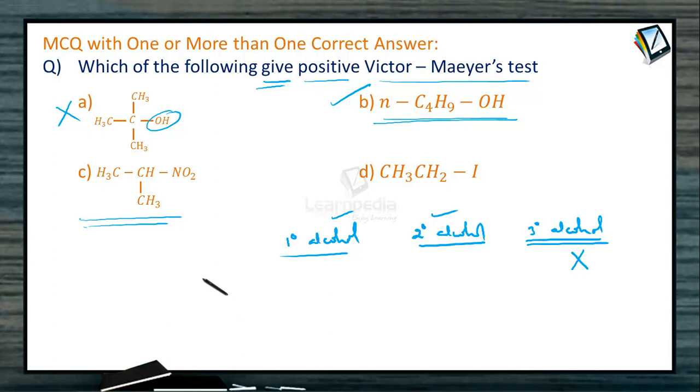As you know, during the Victor-Mayer test, the 1° alcohol or 2° alcohol which we take, such as RCH2OH, this is first converted into the corresponding alkyl iodide RCH2I. Then it is treated with AgNO2 to give RCH2NO2. Thus nitroalkane, so here is the C which is nitroalkane, a part of the Victor-Mayer reaction.